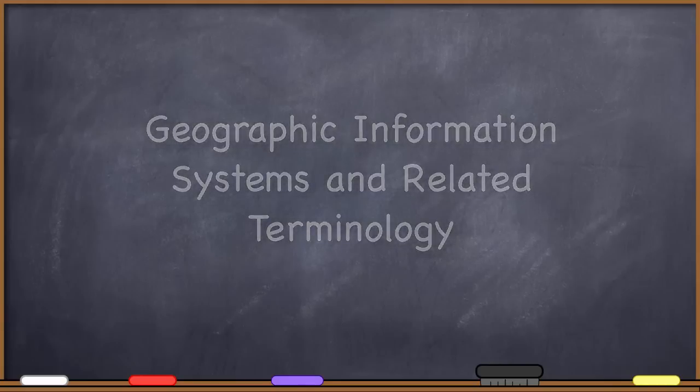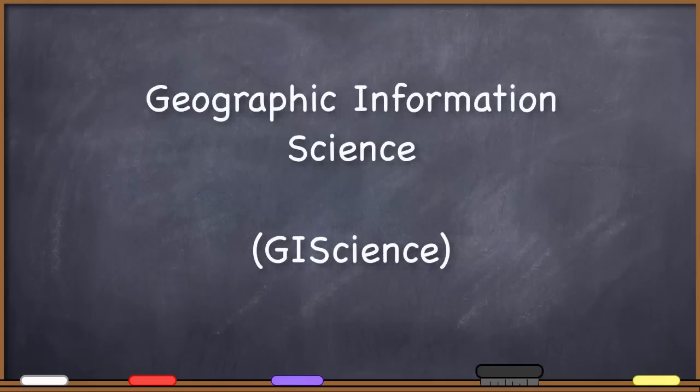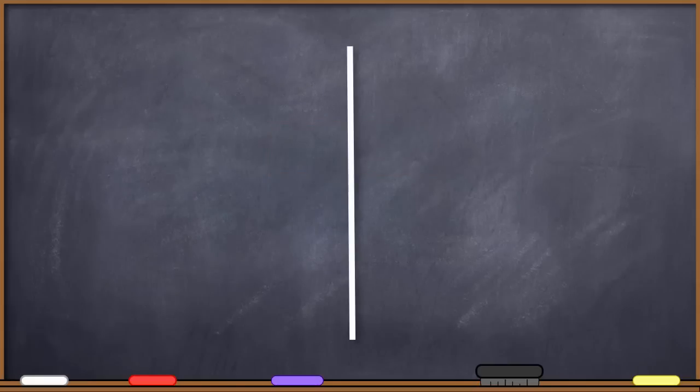The first is geographic information science or GI science. This is a big topic. What is the difference between studying geographic information systems and geographic information science? Depending on who you talk to, you're going to get very different answers. Further, we could get into a deeply philosophical discussion about what exactly it means for something to be a science, but that would be a major digression from our purpose here, so I will leave defining science to another course.